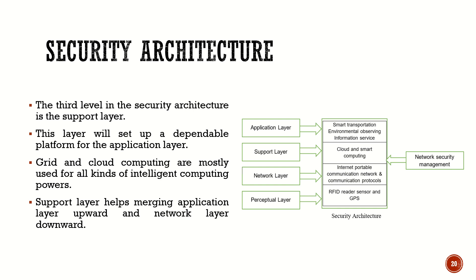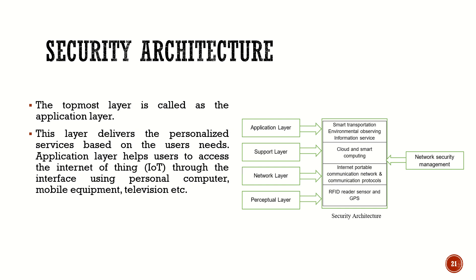The final layer is the application layer, where personalized delivery of applications happens. Whatever application the user wants — whether smart water, smart transportation, smart environment, or smart air systems — will be provided here. It can be accessed through a PC, mobile, or specialized equipment. When talking about security architecture, our attention must be focused on all four layers: perceptual, network, support, and application. In the next session, I'll take a case study and show how to connect these four layers clearly.